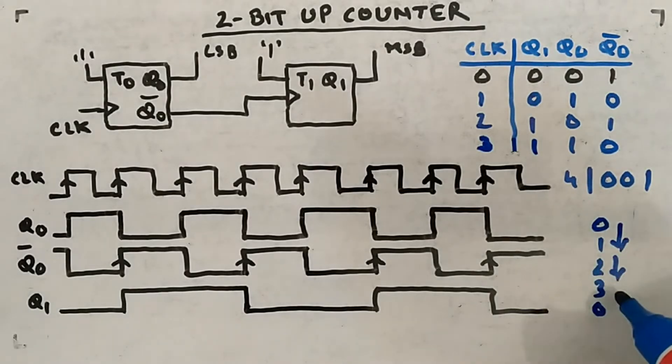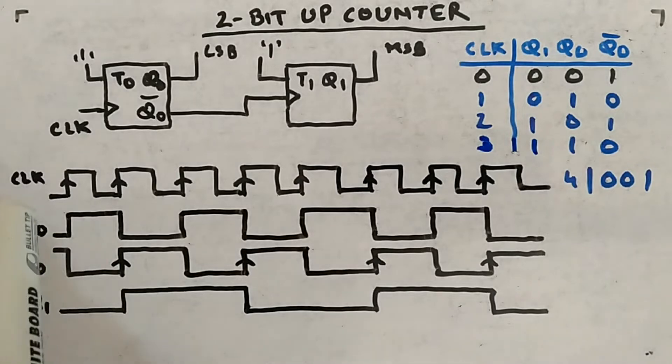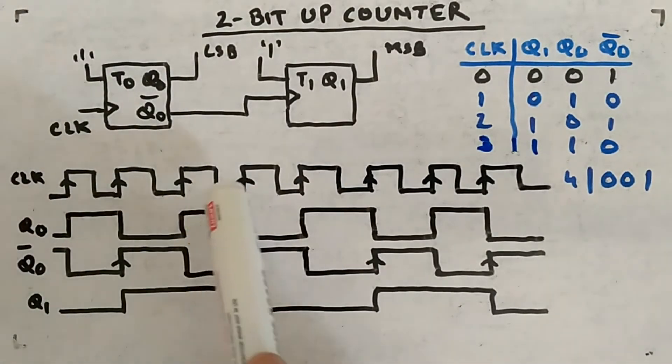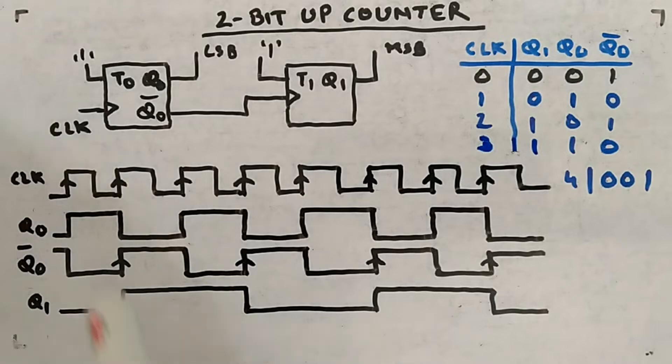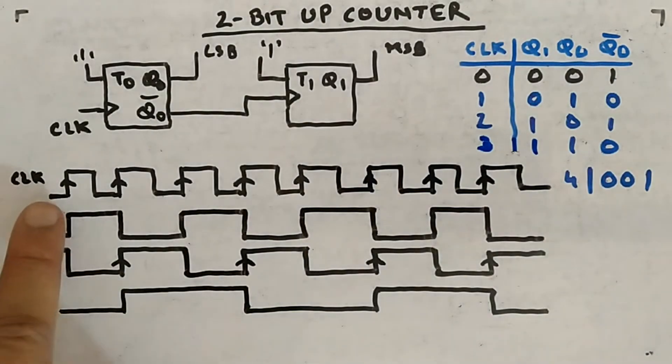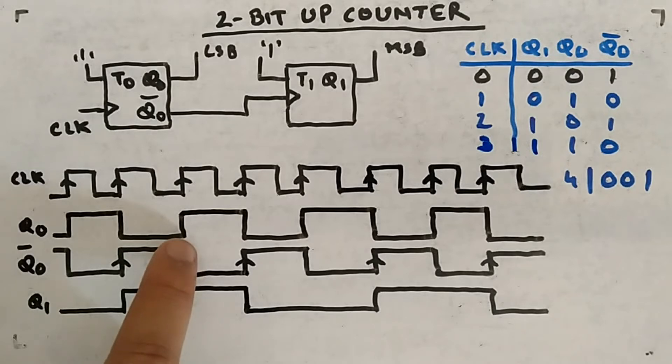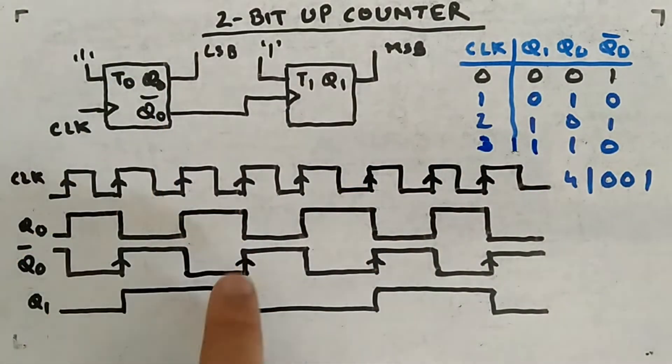Fourth clock cycle: this will toggle, then last guy will be 1. Since there is a change from 0 to 1 positive edge, this guy will also change. So you can see it is 00, 01, 10, 11, then again 00. So 0, 1, 2, 3, then again 0. That's the sequence it follows. So this is an up counter. Now you are clear with the operation.